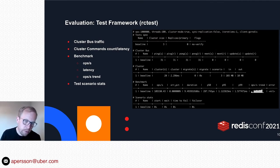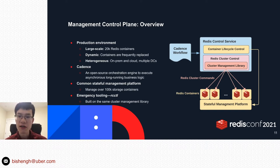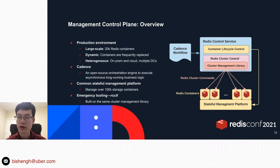That's the part Bisheng will be covering next. Hello everyone, my name is Bisheng. I'll give you an overview of our management control plane. Let me first give some context on our production environment. Our environment is large-scale, dynamic, and heterogeneous. We are running over 20,000 Redis containers across thousands of hosts. Those containers are frequently being replaced to mitigate hardware failures or to optimize resource efficiency. We also have both on-prem and cloud hardware spanning across multiple data centers. To navigate through such an environment, we have built a fully automatic control plane for the operational management of Redis cluster.